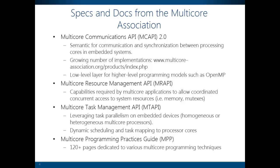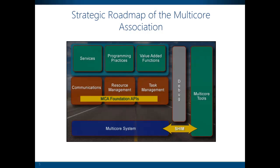We've also, this year, put out a Multicore Programming Practices Guide, which has currently been downloaded by over 3,000 people around the world. The original strategic roadmap of the Multicore Association consisted of these MCA Foundation APIs. With the introduction of SHIM, we're now adding another piece of the puzzle, where SHIM will provide an interface between the Multicore system and Multicore tools.